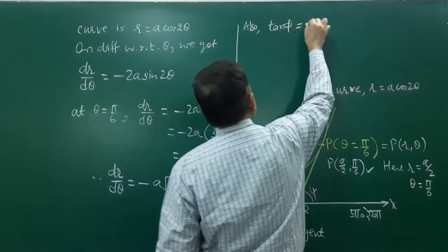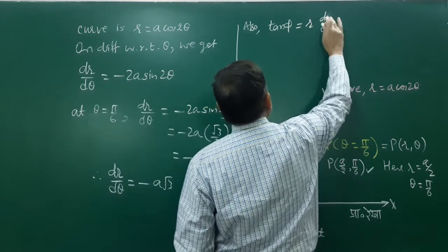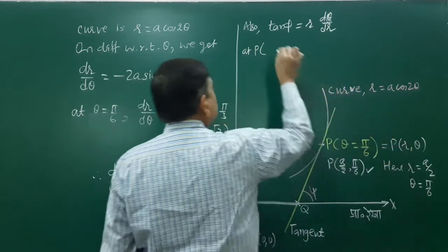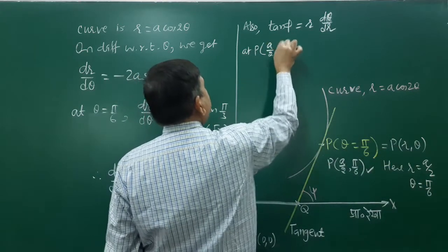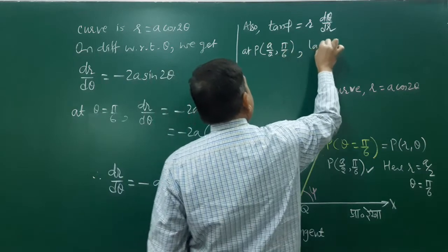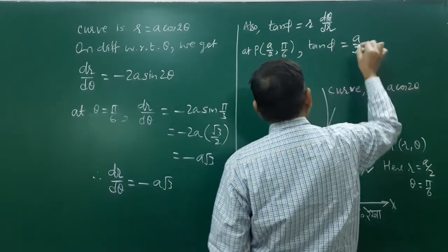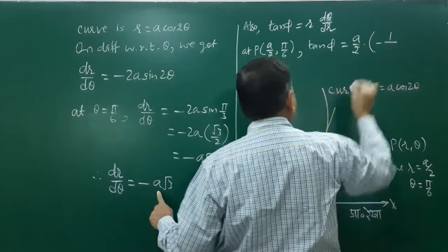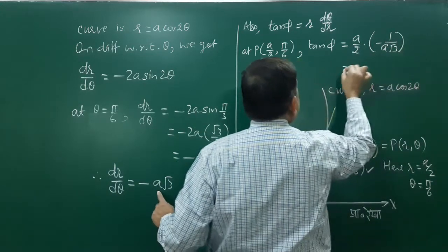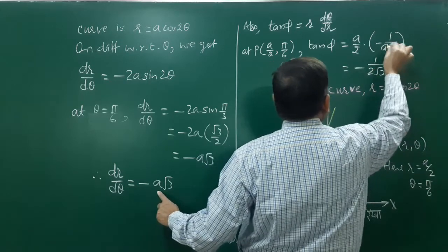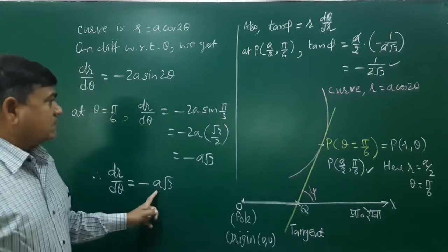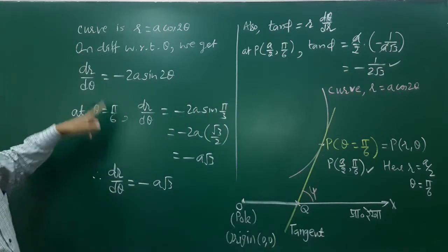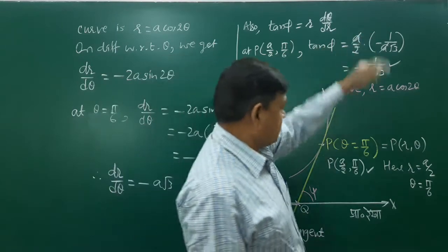We use the formula tan(φ) = r·(dθ/dr), which is r divided by (dr/dθ). At point P, r = a/2 and dr/dθ = −a√3, so tan(φ) = (a/2)·(1/(−a√3)) = −1/(2√3). Note: the formula uses dθ/dr, which is the reciprocal of dr/dθ.